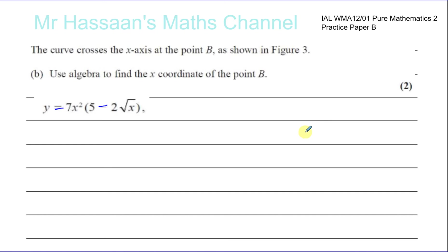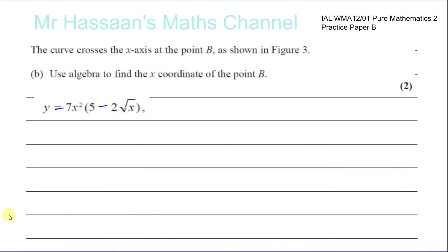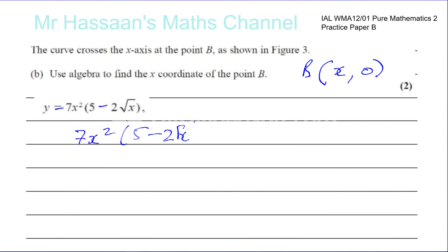For part B: the curve crosses the x-axis at point B. At B the y-coordinate is zero, so we set 7x squared times (5 minus 2 root x) equal to zero. Either 7x squared equals zero, giving x equals zero, or 5 minus 2 root x equals zero.